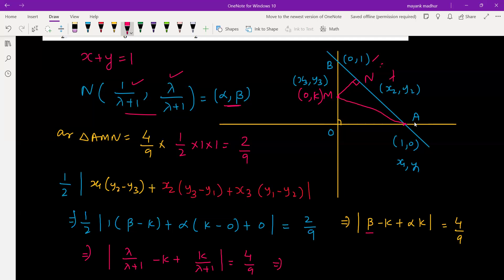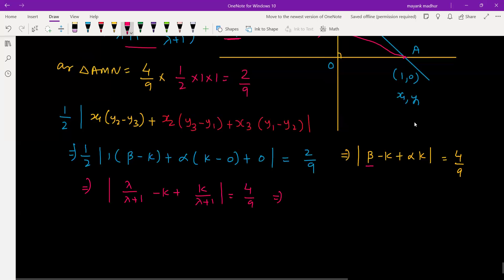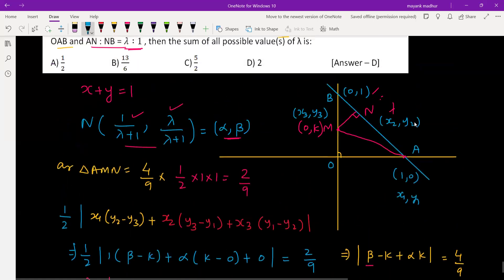Substituting alpha and beta values: lambda by lambda plus 1 minus k times lambda plus 1. Lambda minus k plus k will cancel out, and we'll get modulus of lambda times 1 minus k over lambda plus 1 equals 4 by 9. This is one information.